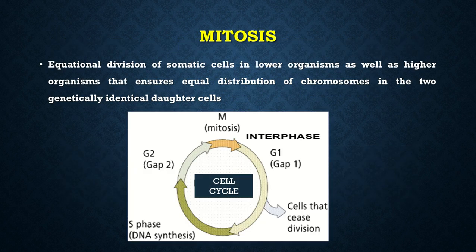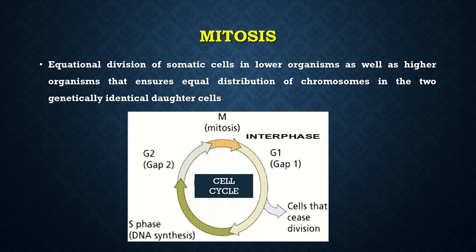Mitosis is a term with which you all are familiar from your junior classes. Mitosis, as we all know, is an equational division of somatic cells in lower as well as higher organisms that ensures equal distribution of chromosomes in the two genetically identical daughter cells. The aim of cell division is to produce daughter cells, so it should be ensured that the daughter cells get equal proportions of the genetic material from the mother cell. This is ensured by the process of mitosis.